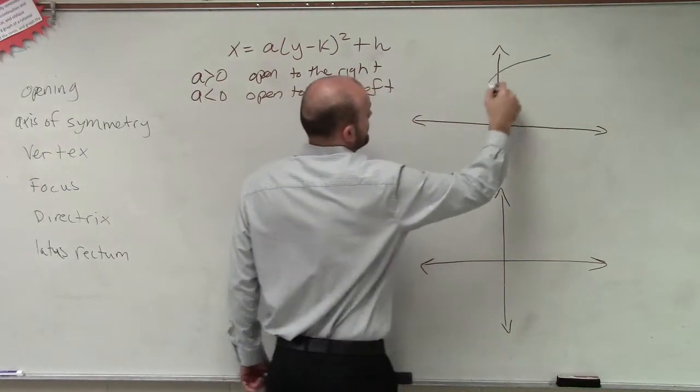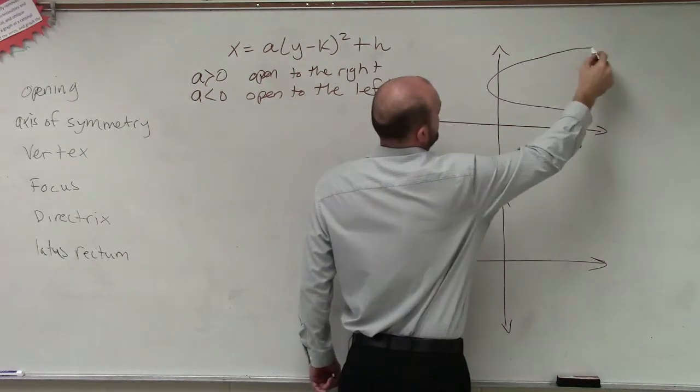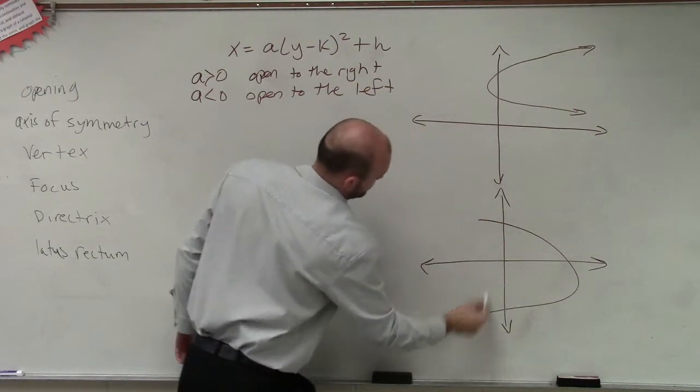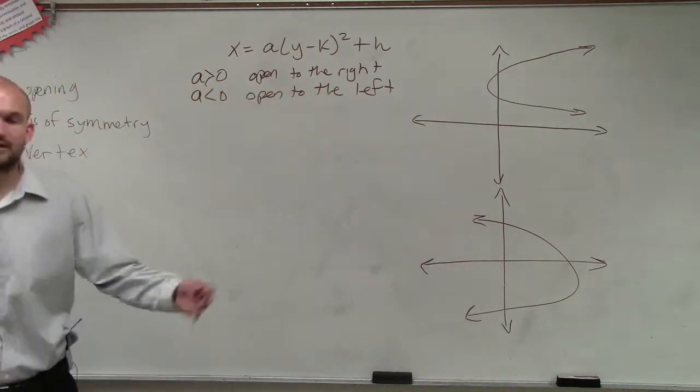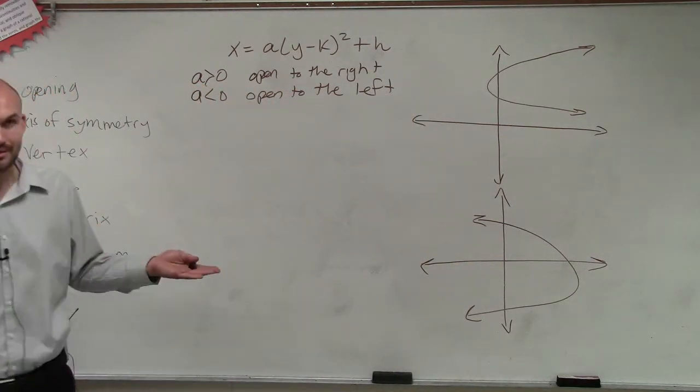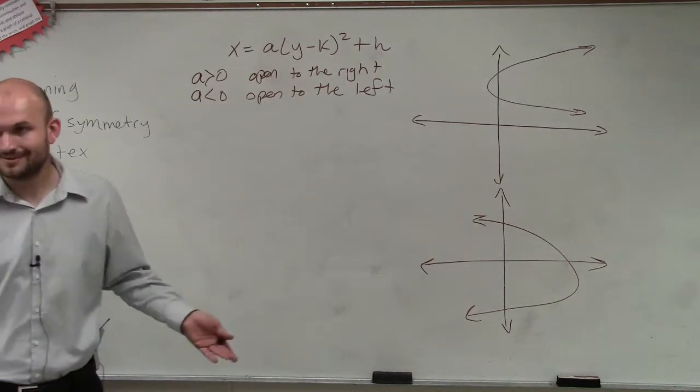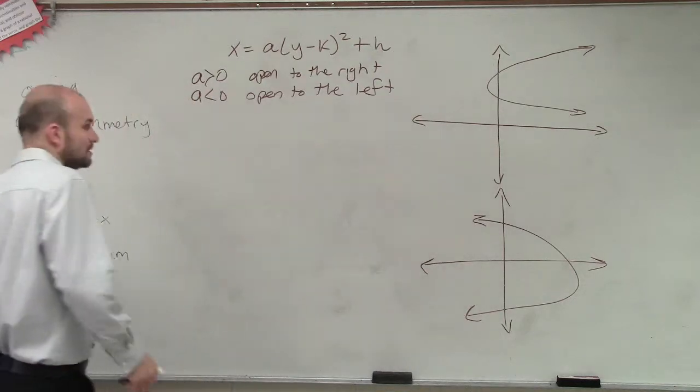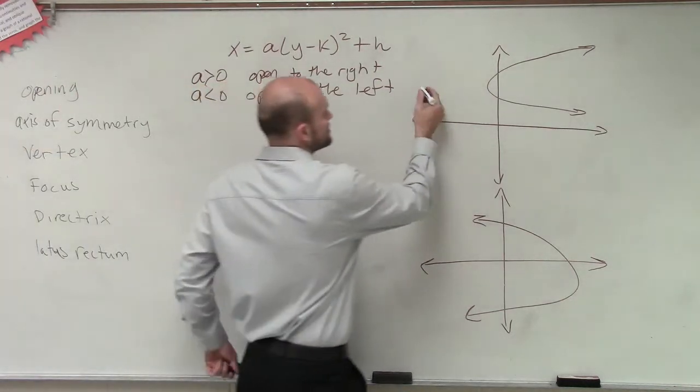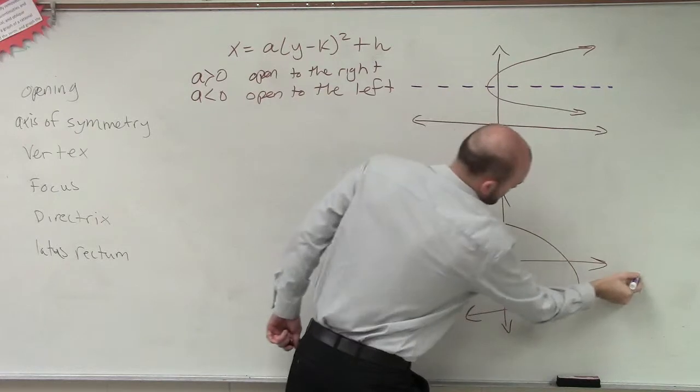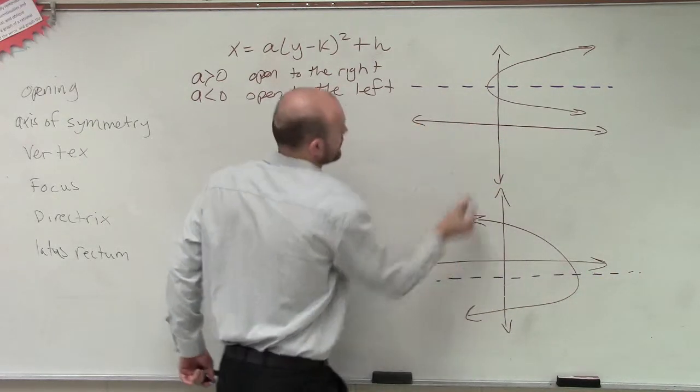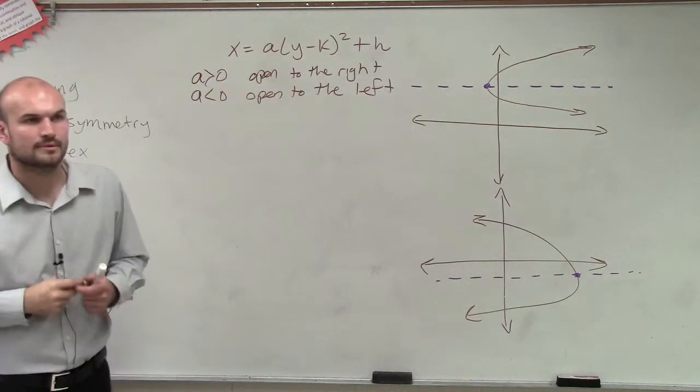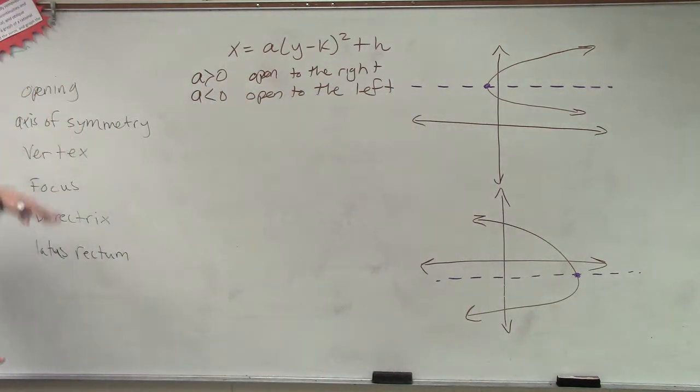So let's just do some examples here. OK? Now, just because it's a sideways parabola does not mean that it cannot have an axis of symmetry and a vertex. So let's go ahead and plot our axis of symmetries and then our vertex, right?